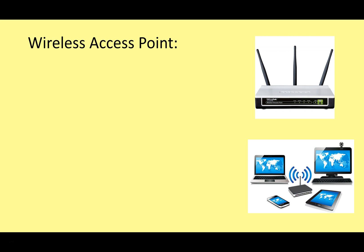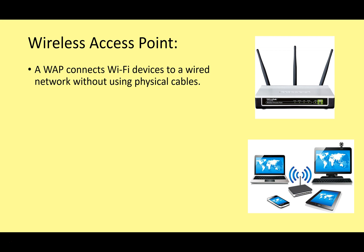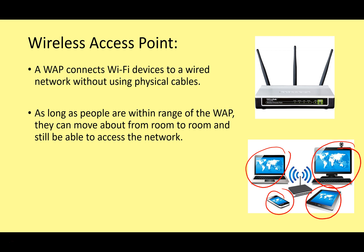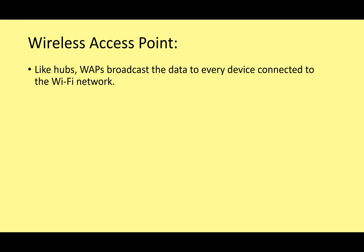Hubs and switches connect together wired networks, but for a wireless network we need a wireless access point, sometimes referred to as a WAP. This connects Wi-Fi devices to your wired network without using physical cables, meaning you can use your laptop, smartphone, or tablet on the network without cables. As long as people are within range of the WAP, they can move from room to room and still access the network. Like hubs, WAPs broadcast data to every device connected to the Wi-Fi network on a radio wave.